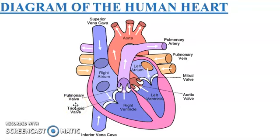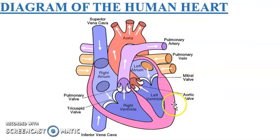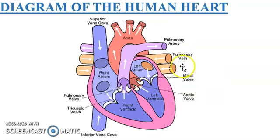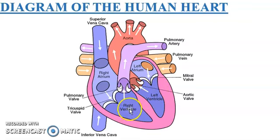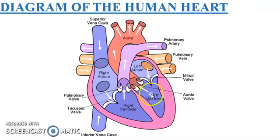The four valves are: the pulmonary valve, the tricuspid valve, the mitral valve (also known as the bicuspid valve — take note of that), and the aortic valve. The tricuspid valve and the mitral valve control the amount of blood flowing from the atrium to the ventricle. The pulmonary valve and the aortic valve control the flow of blood out of the ventricles.